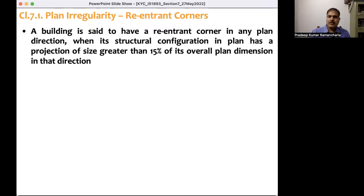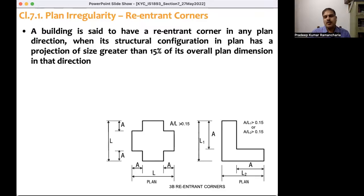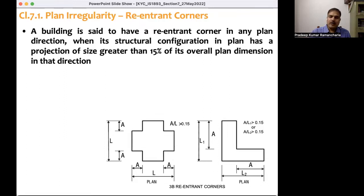So what does this mean? We can look at these two figures. In plan, the total length is L and this is the projected part. This projected part compared to the total length is 15 percent, so then this building is said to have a re-entrant corner along the x direction. Similarly, along the y direction also it is the same thing.